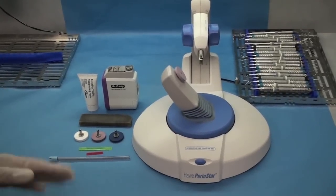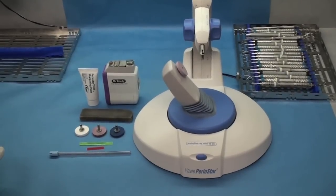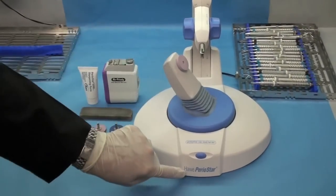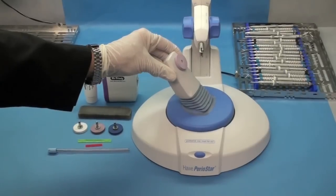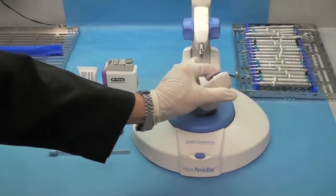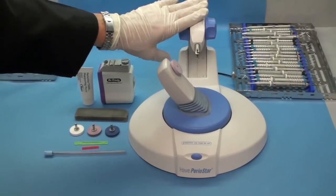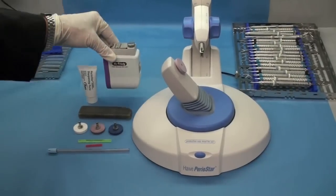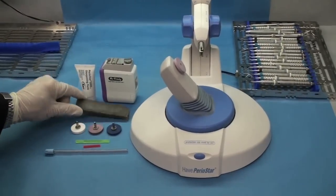Here are the three instruments that we're going to use for sharpening our perio instruments, our scaling instruments. This is the Periostar by H-A-W-E, Howe. They make it and it swivels. And I'm going to go into detail on how to use everything. Here's the Periostar, here is the Hu-Friedy Sidekick, and here is a hand stone.